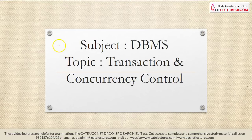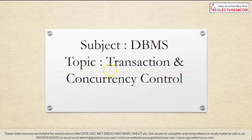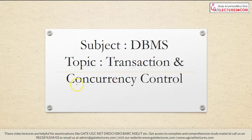Hello everyone, welcome to getlectures.com. Today the topic which we are going to discuss is Transactions and Concurrency Control. Today we will see what is recoverability, what is serializability, and how to ensure recoverability and serializability through the Concurrency Control Protocols. In Concurrency Control Protocols, we will see two-phase locking protocols, timestamping protocols, and the deadlock problem. Let's start with transactions.